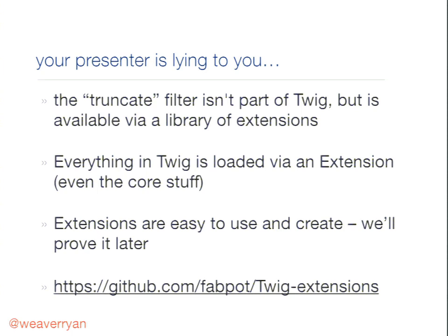The truncate filter isn't technically part of Twig's core, but there's a library of extensions. Everything inside Twig — all the way down to functions, filters, and even the plus sign — is added via an extension. Extensions are Twig's plugin system. Without any extensions, Twig doesn't even know what plus means. When you want to add your own custom filters or functions, you create a Twig extension class. There's also a community repository full of useful extensions like the truncate filter.